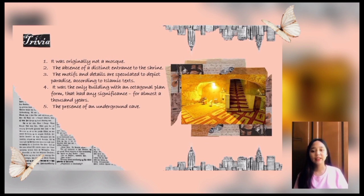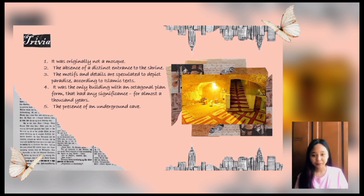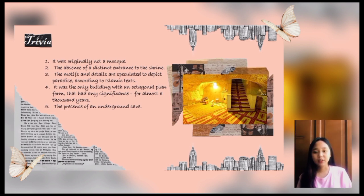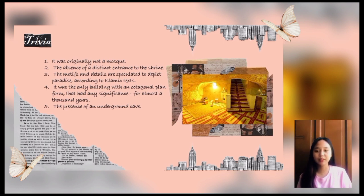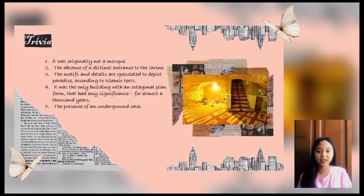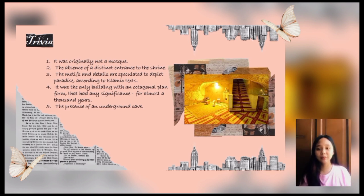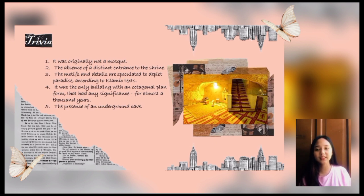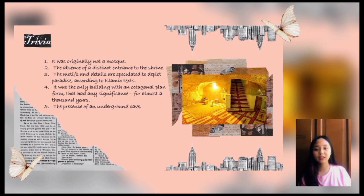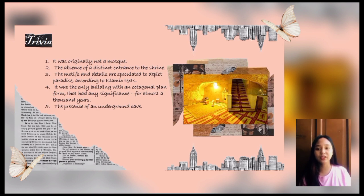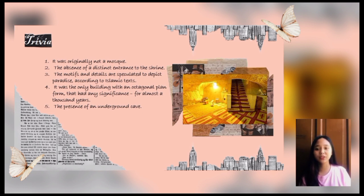Third, the motif details are speculated to depict paradise. According to Islamic texts, the portion above the arches in the Dome of the Rock was decorated with mosaic tiles only in the 16th century. Before that, this portion was adorned with glass tiles featuring vegetal motifs, trees, and buildings as symbols of paradise. Fourth, it was the only building with an octagonal platform that had any significance for almost 8,000 years. During its construction, there were very few built forms with distinct religious identities, and the octagonal platform was and remained unique.